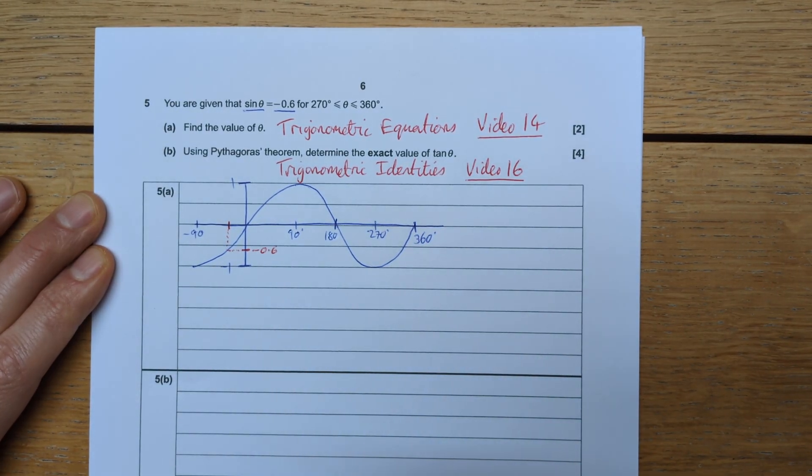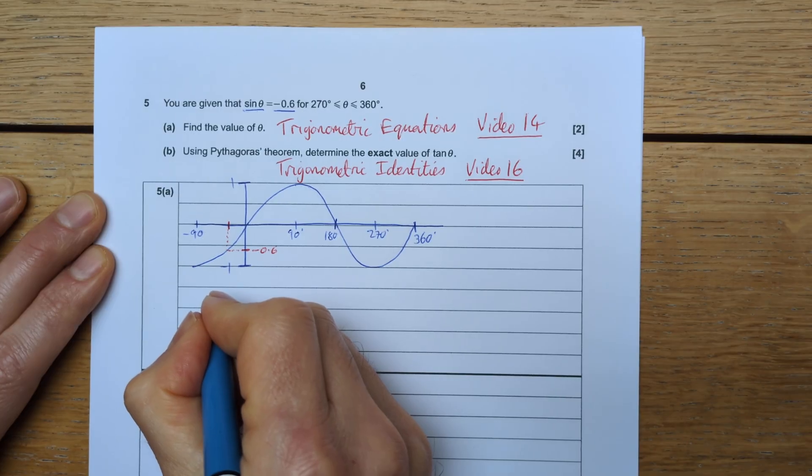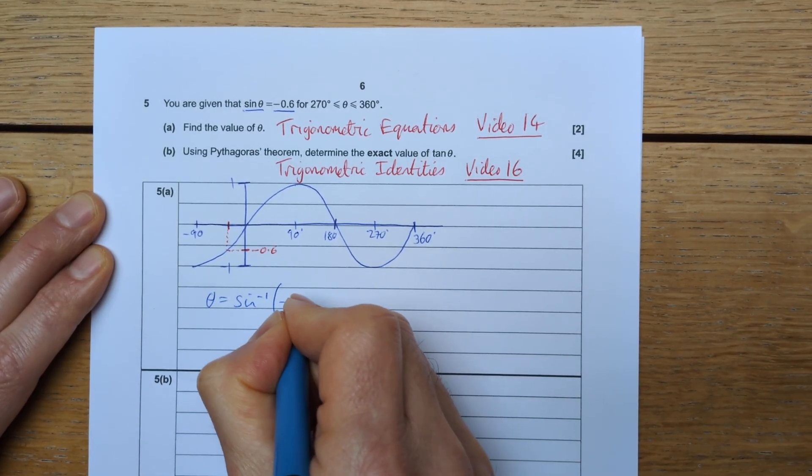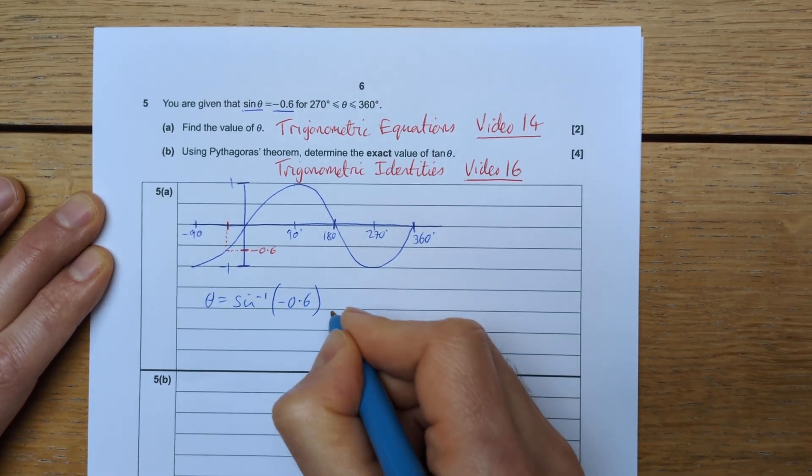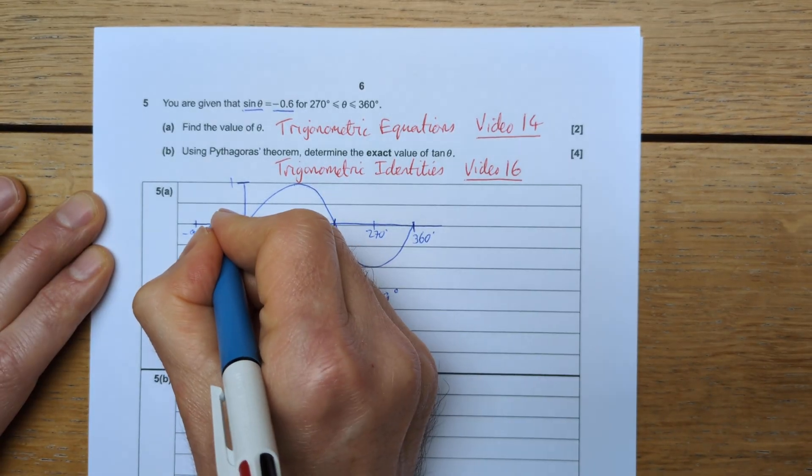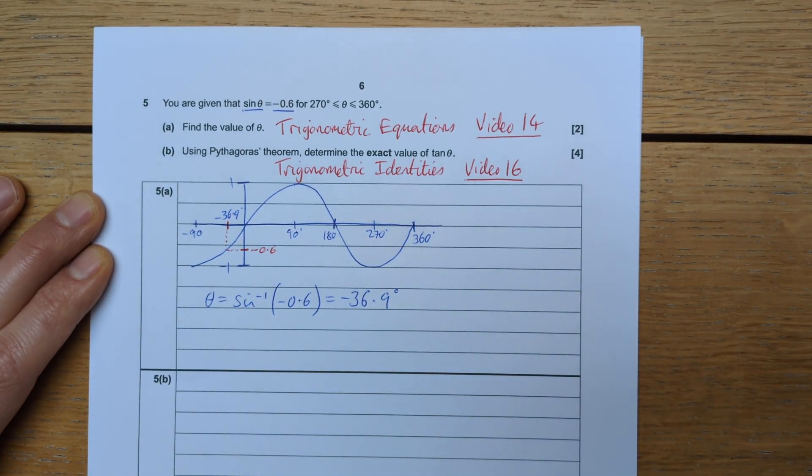And you will get that value from doing the inverse sine of negative 0.6, which is our first step trying to find the angle. And that is negative 36.9 degrees. So that's that value there, negative 36.9 degrees. But we don't want that value.